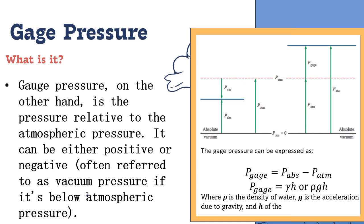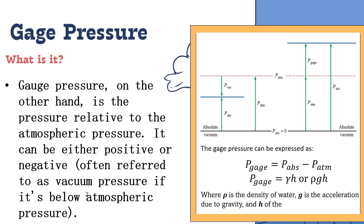Gauge pressure, on the other hand, is the pressure relative to the atmospheric pressure. It can be either positive or negative, often referred to as vacuum pressure if it is below atmospheric pressure. The gauge pressure can be expressed as: gauge pressure equals absolute pressure minus atmospheric pressure.